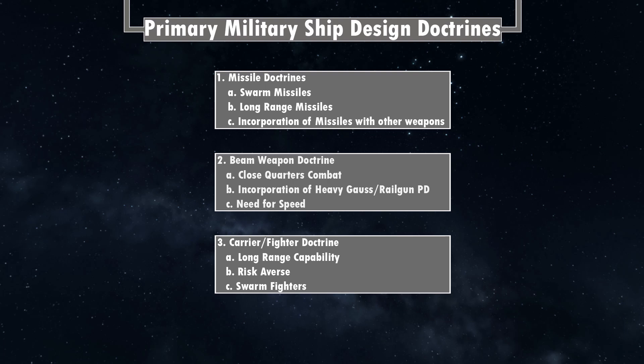Next we have beam doctrine, where you're primarily focusing on beam weapons. There are many different kinds, and you're generally going for close-quarters combat, incorporating gauss cannons and rail guns for point defense, and generally moving much faster than missile ships. The third doctrine is carrier and fighter doctrine, which benefits from long-range capability, being risk-averse, and being able to swarm out fighters to unleash massive alpha strikes.